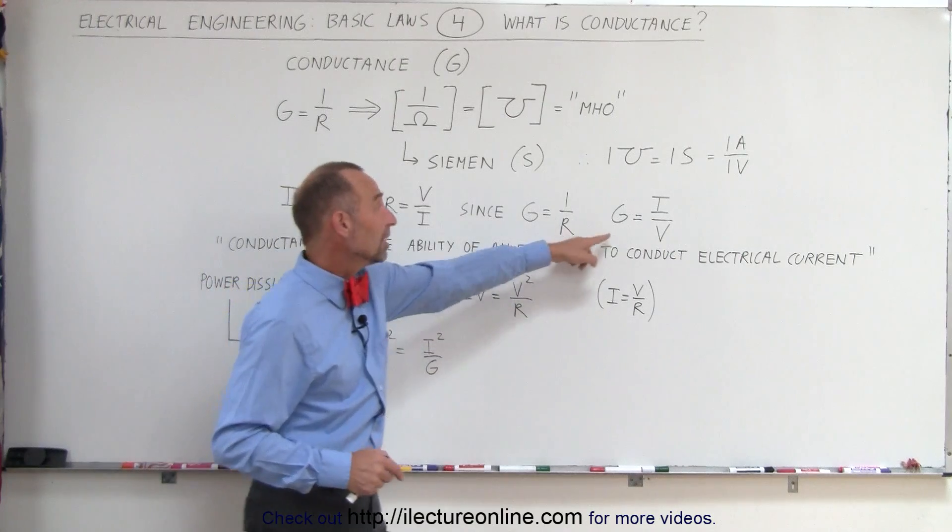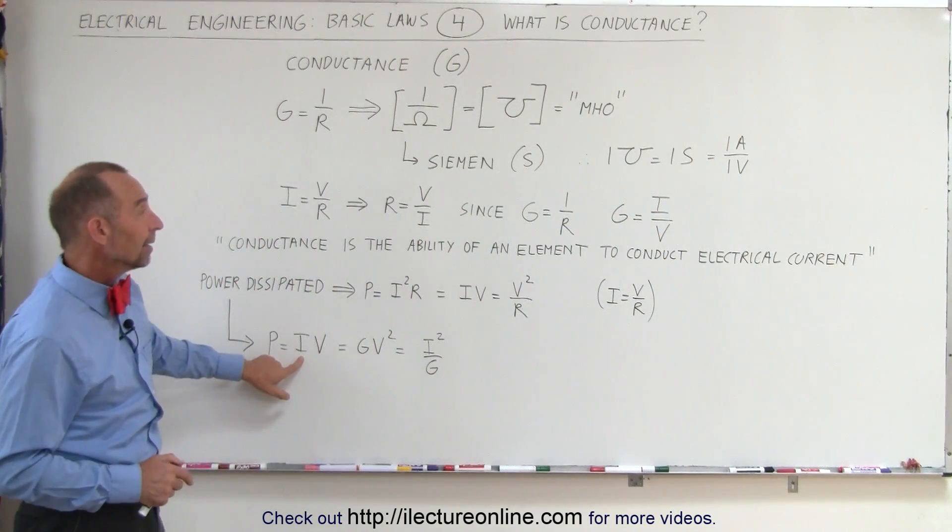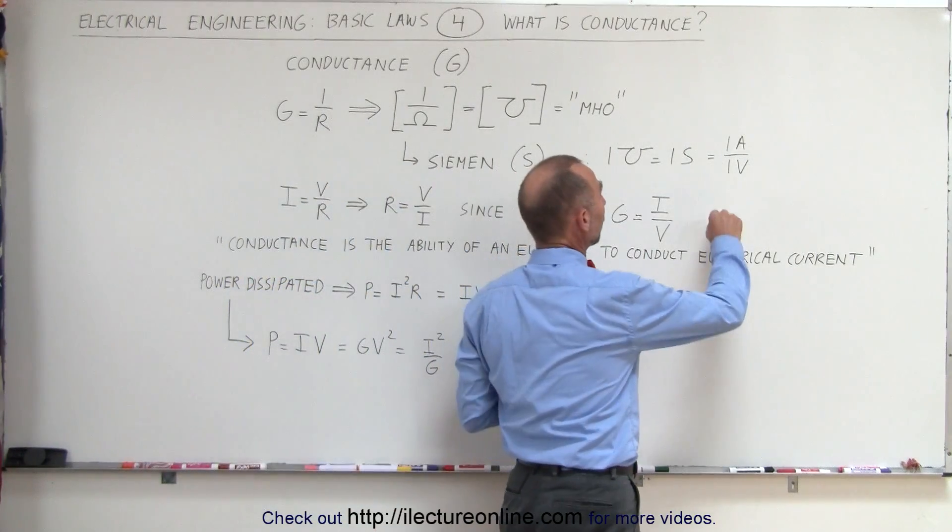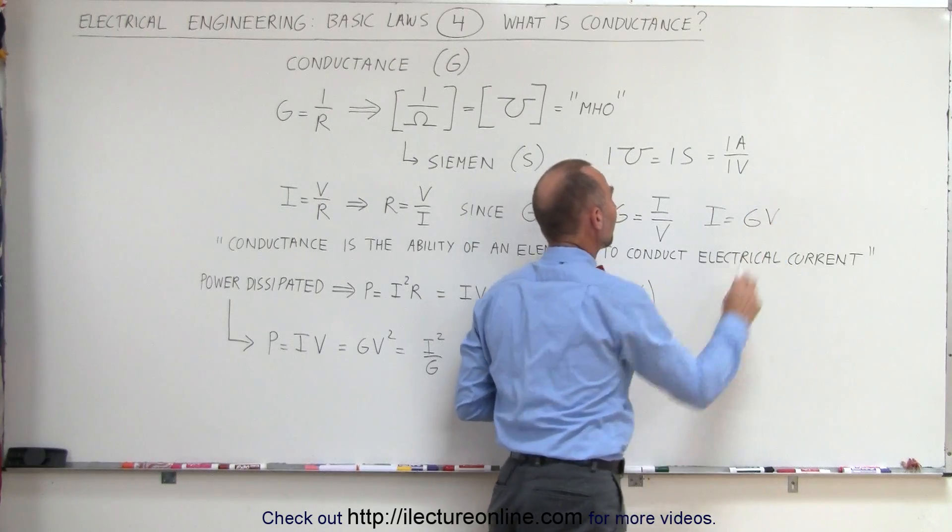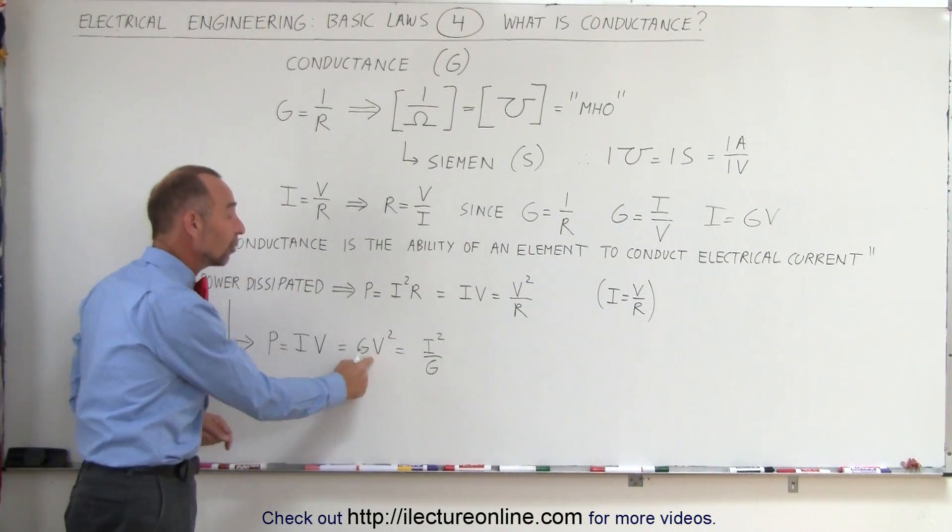and since G is I divided by V, we can then replace I by G times V, so we can solve this equation. We can then write I is equal to G times V. If we substitute that in for I here, we get G times V squared,